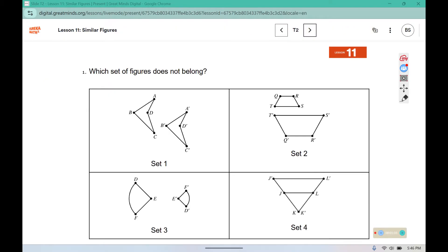Number one, which set of figures does not belong? We as a class decided that this is a dilation and a reflection over the line. This one is a rotation and a dilation to shrink it. And this one is just a dilation from point K.